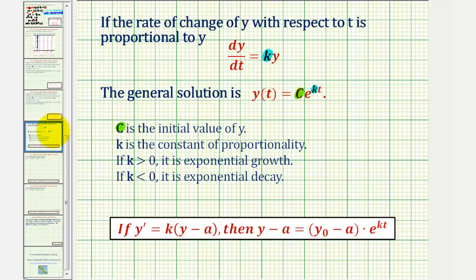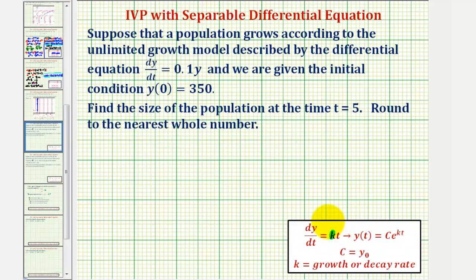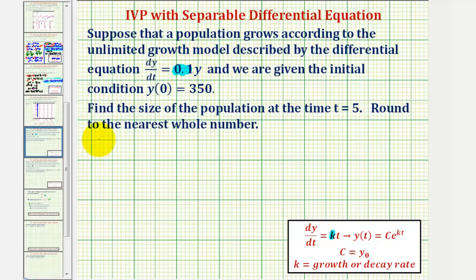So going back to our example, notice that k is equal to 0.1. And because we know that y(0) equals 350, c is equal to 350, which again is the initial value. And therefore, the particular solution to this initial value problem is y(t) equals c, which is 350, times e raised to the power of kt, or 0.1 times t.